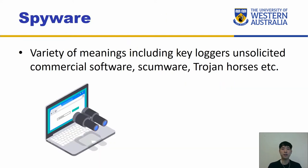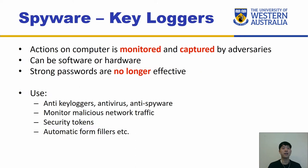Moving on — spyware. There's a variety of spywares, which includes keyloggers, unsolicited commercial software, scumware, Trojan horses, and so forth. First, we'll look at keyloggers. Keyloggers monitor actions on your computer, capture those actions, and send them back to the adversaries or attackers. This can be either software or hardware — for example, if you purchase hardware from an unbranded source, it could have some sort of keylogger.